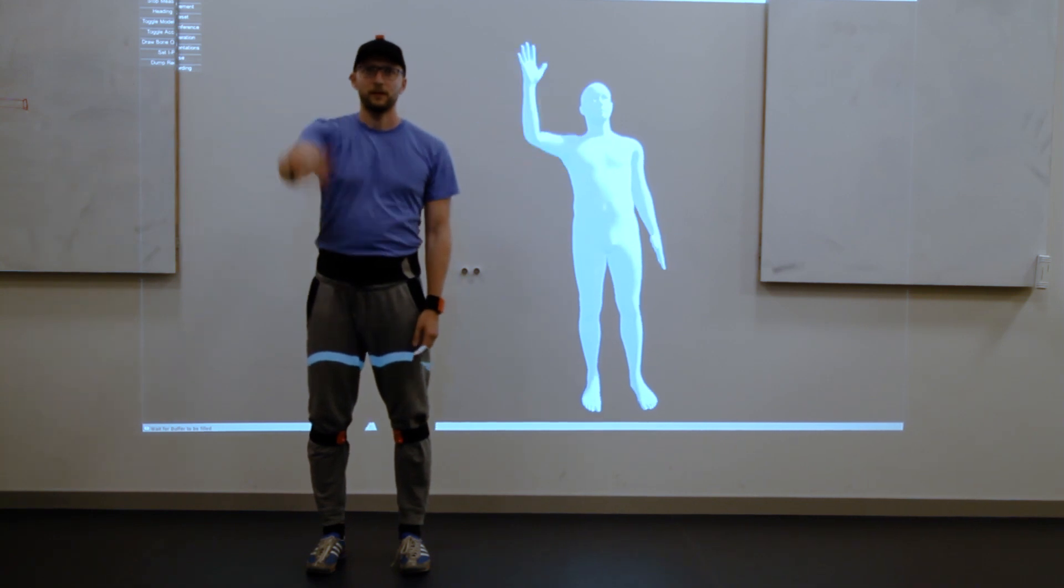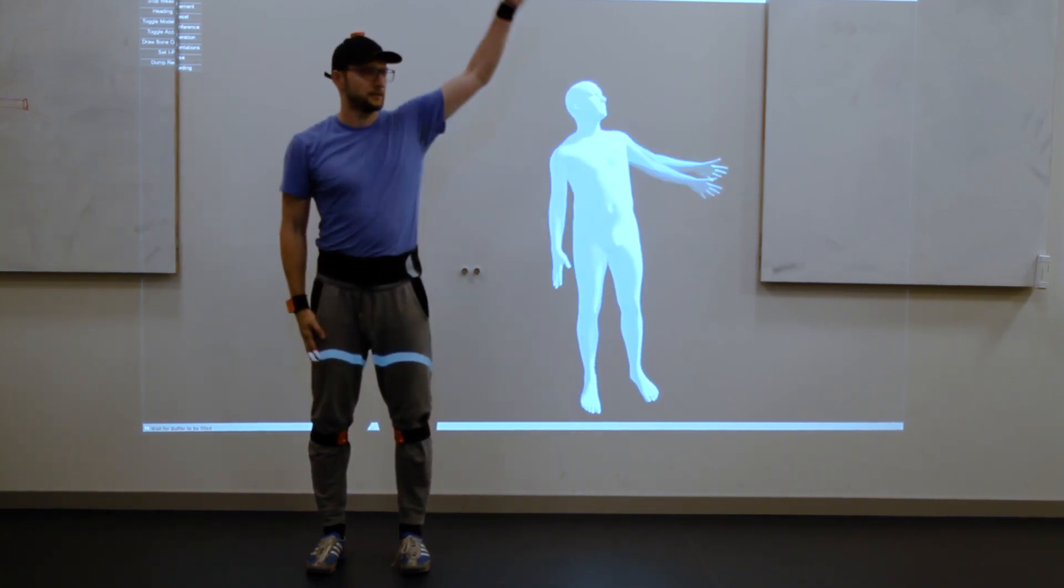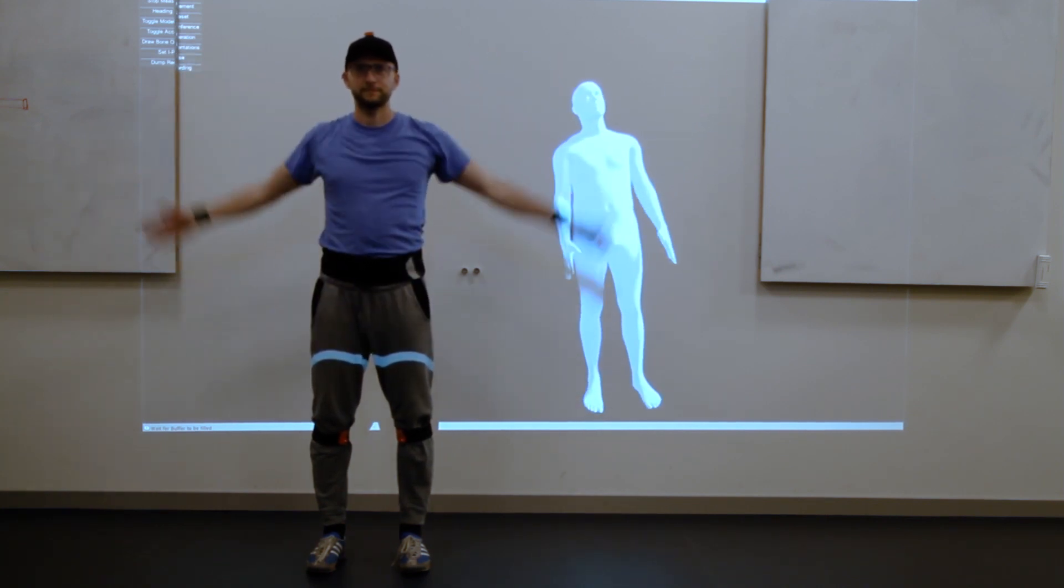In contrast to most vision-based methods, DIP can accurately capture limb orientation, which is an important aspect in many application scenarios such as character animation.